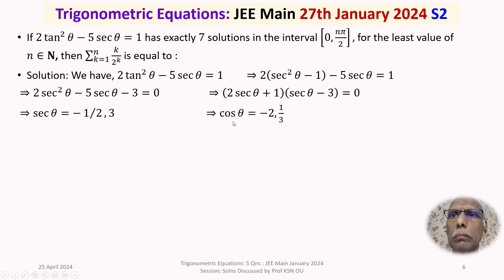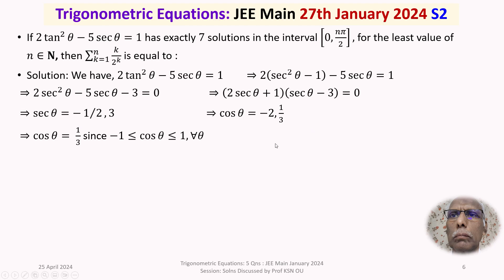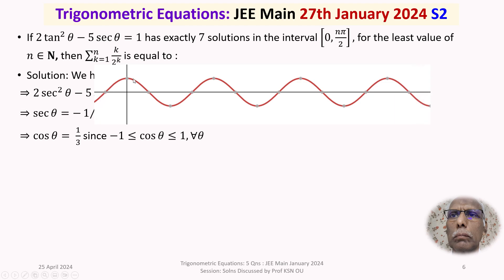From secθ = -1/2 or 3, we get cosθ = -2 or cosθ = 1/3. We reject cosθ = -2 because cosθ must satisfy -1 ≤ cosθ ≤ 1. Therefore cosθ = 1/3. We now draw the cosθ curve to analyze solutions graphically.